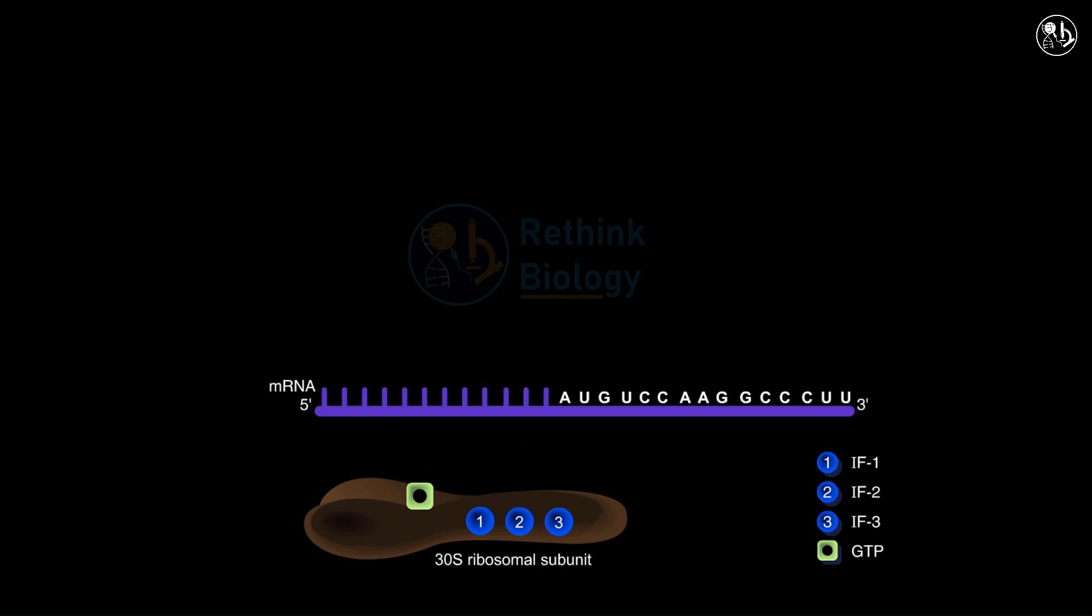The ribosome IF-GTP complex recognizes a sequence in the leader before the AUG start codon. This sequence is called the ribosome binding site or the Shine-Dalgarno sequence after its discoverers.